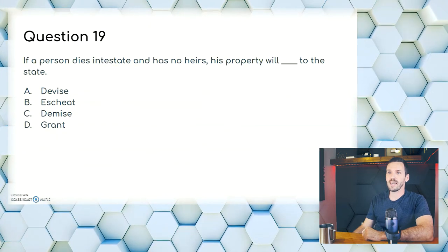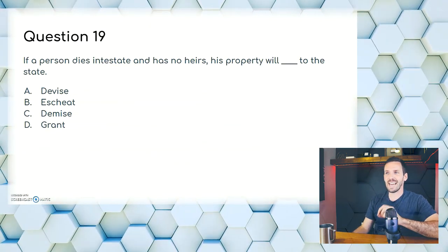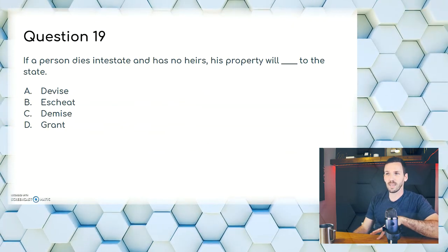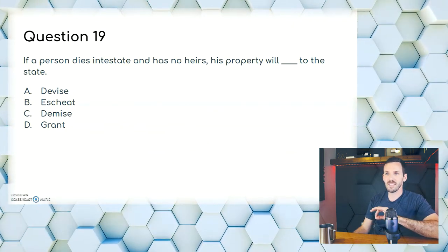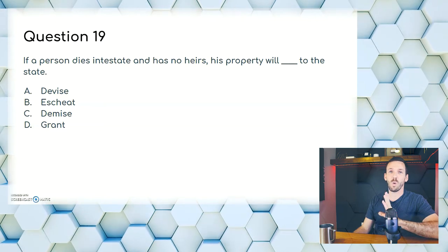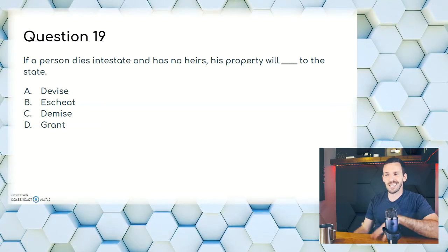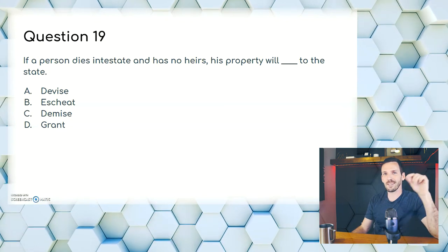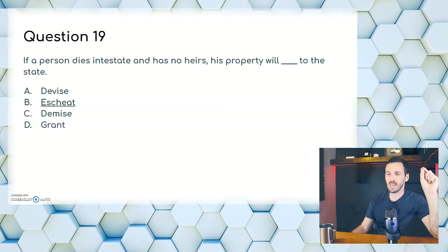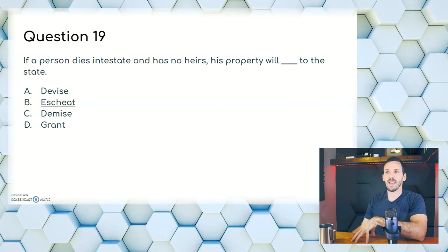Question nineteen: if a person dies intestate and has no heirs, his property will blank to the state. A, devise; B, escheat; C, demise; or D, grant. Escheat is the keyword for property going back to the state — this is more memorization. Answer is B, escheat.